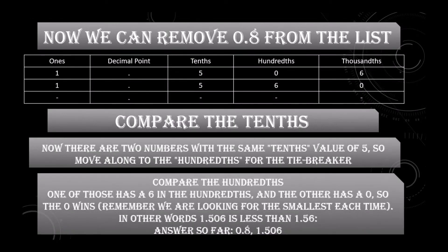Now we can remove 0.8 from the list. Only two numbers remain: 1.506 and 1.560. Compare the tenths — both numbers have the same tenths value of five, so move along to the hundredths for the tiebreaker.